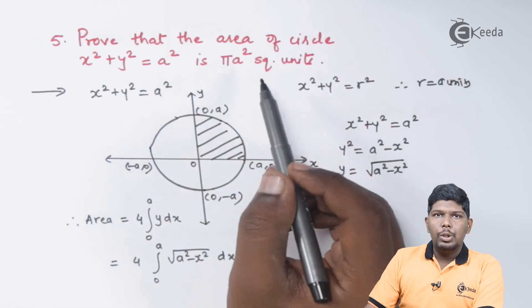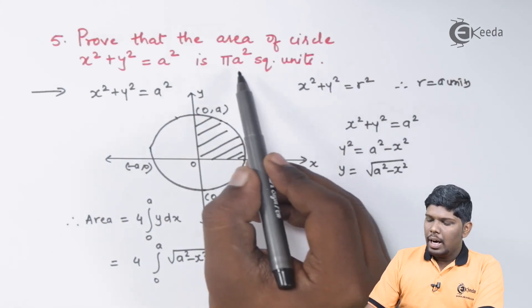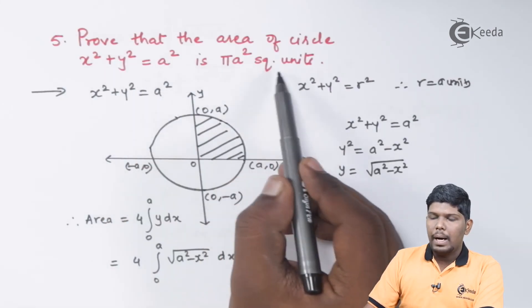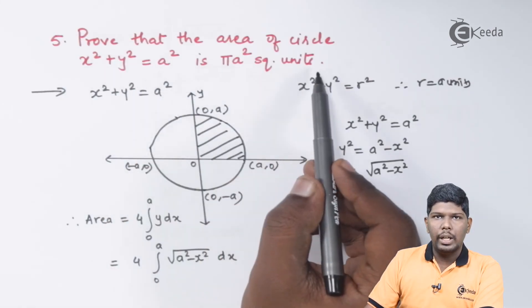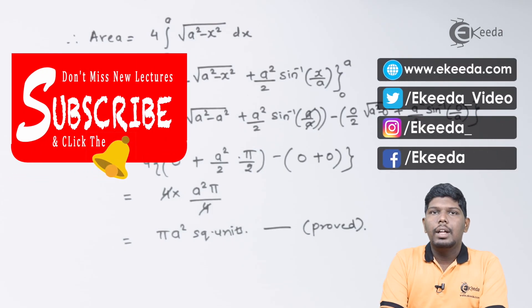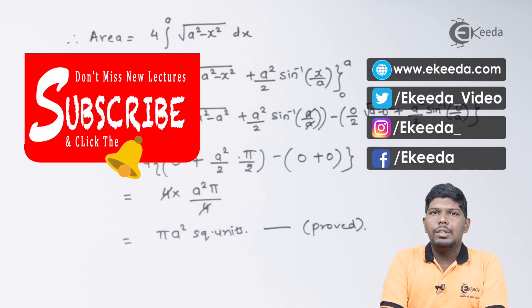So as you can see, we have proved that the area of the circle is πa² square units. I hope friends you have understood this problem. Thank you for watching this video — stay tuned with Ikida and subscribe to Ikida.